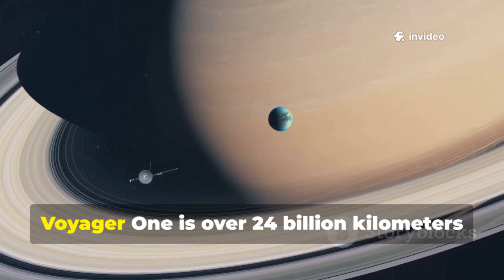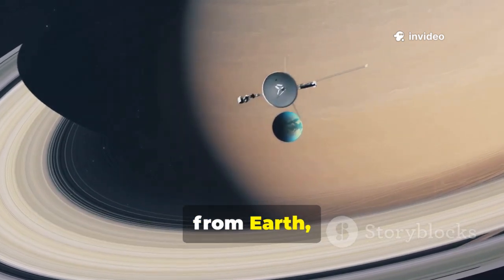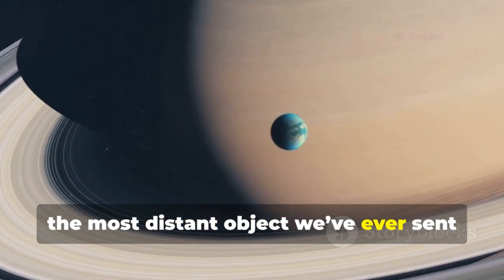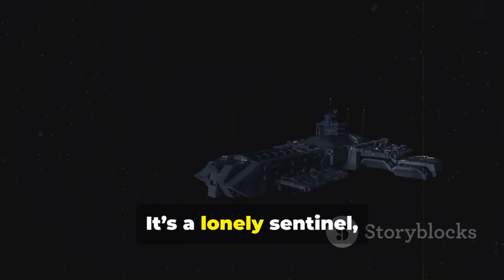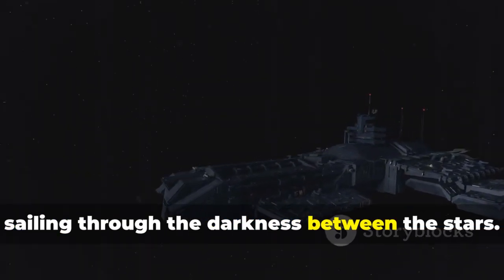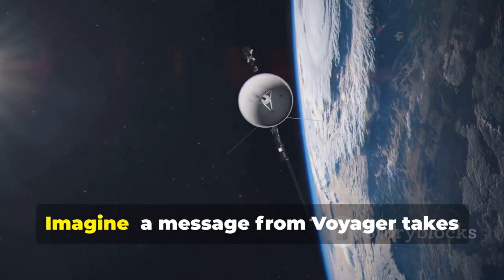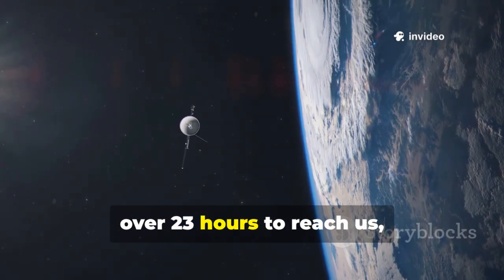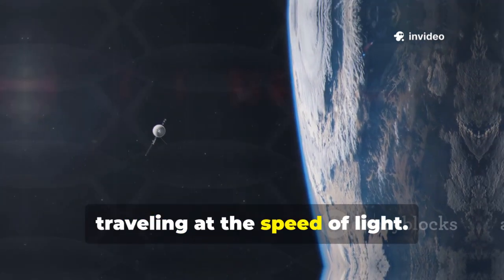Today, Voyager 1 is over 24 billion kilometers from Earth, the most distant object we've ever sent into space. It's a lonely sentinel, sailing through the darkness between the stars. A message from Voyager takes over 23 hours to reach us, traveling at the speed of light.